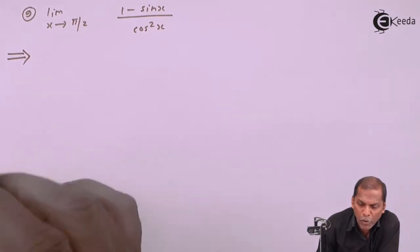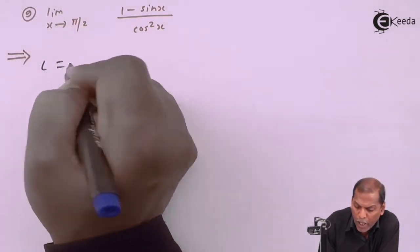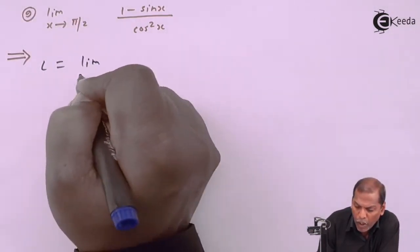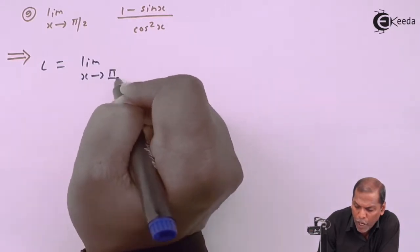Now let's see the solution. Let L equal the limit as x tends to π/2 of (1 - sin x)/(cos²x).